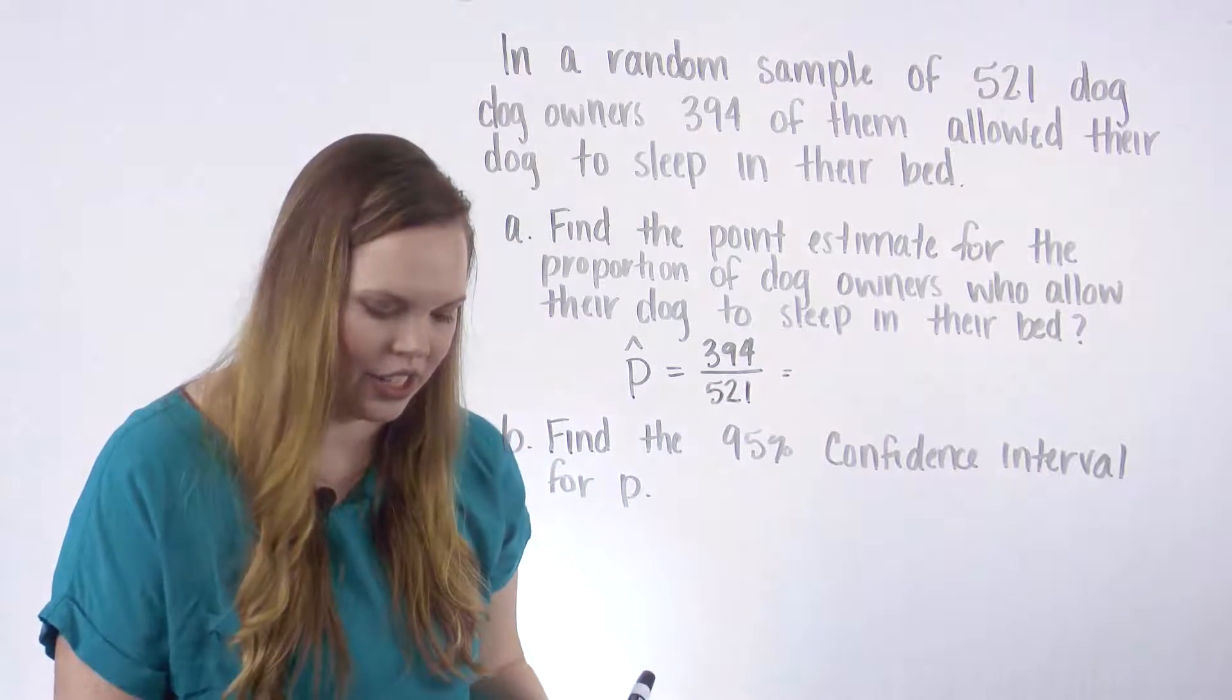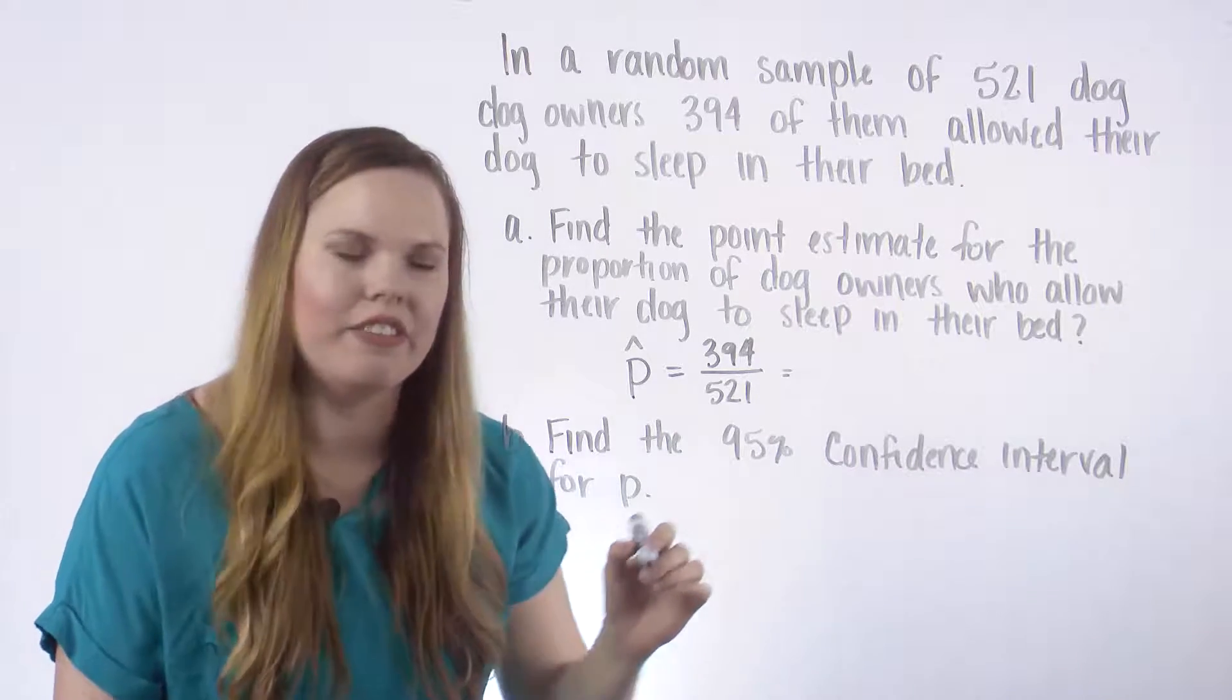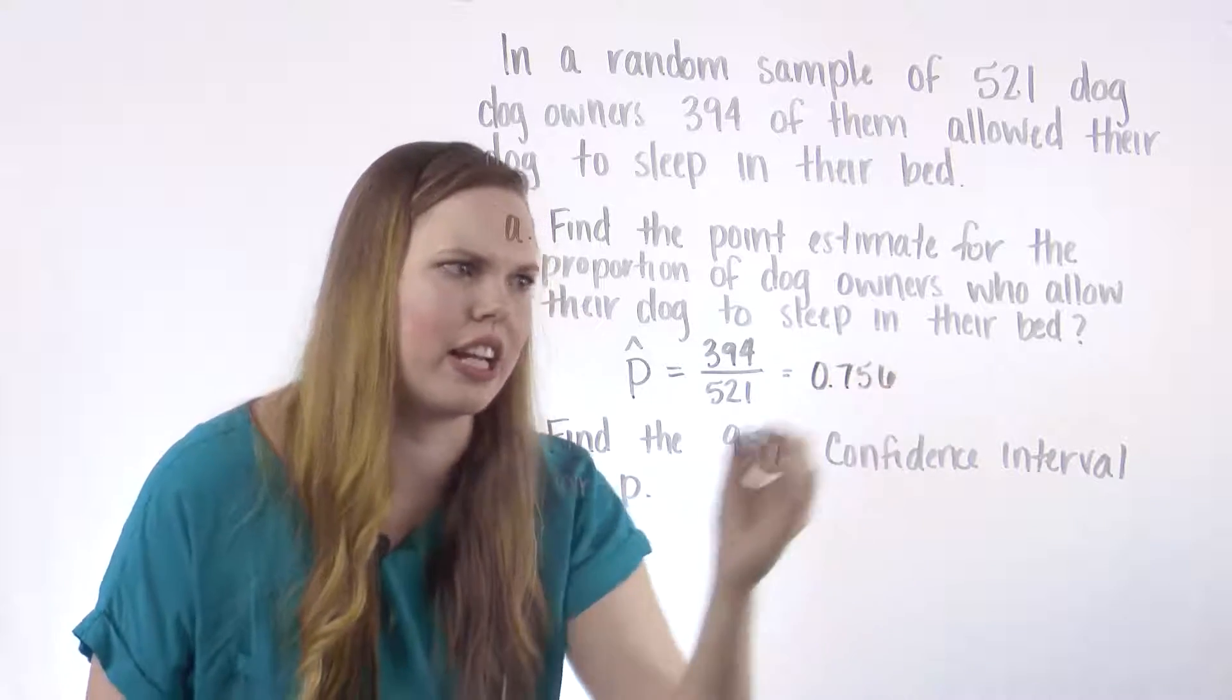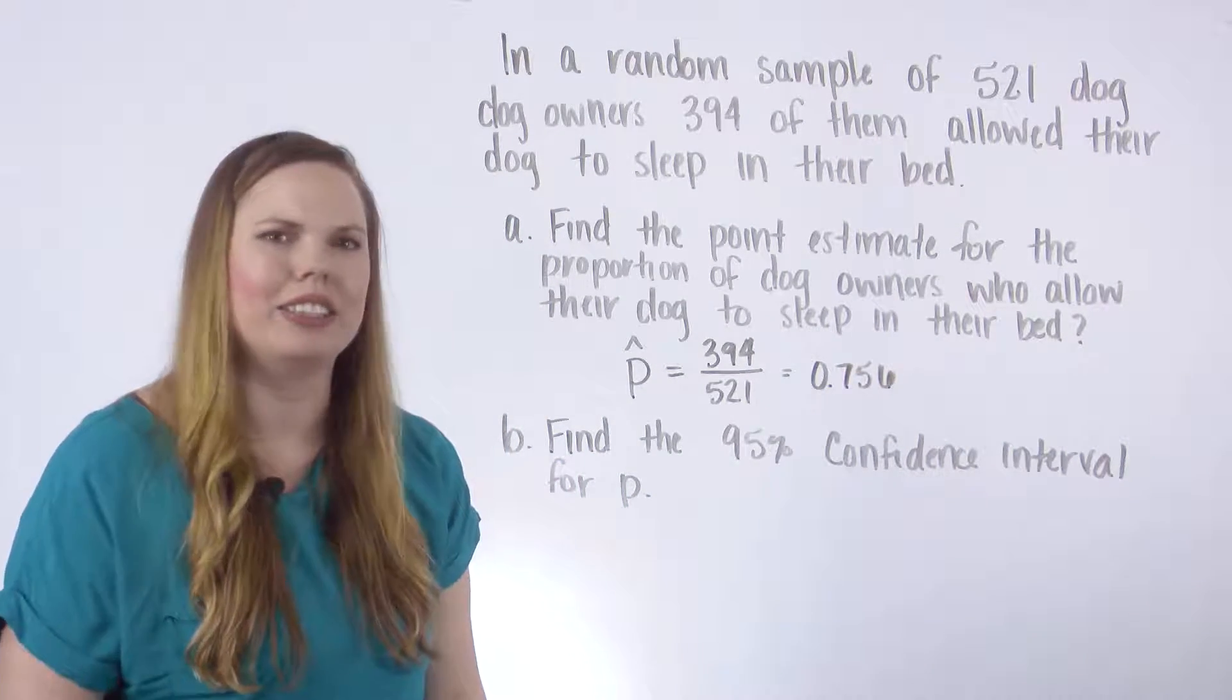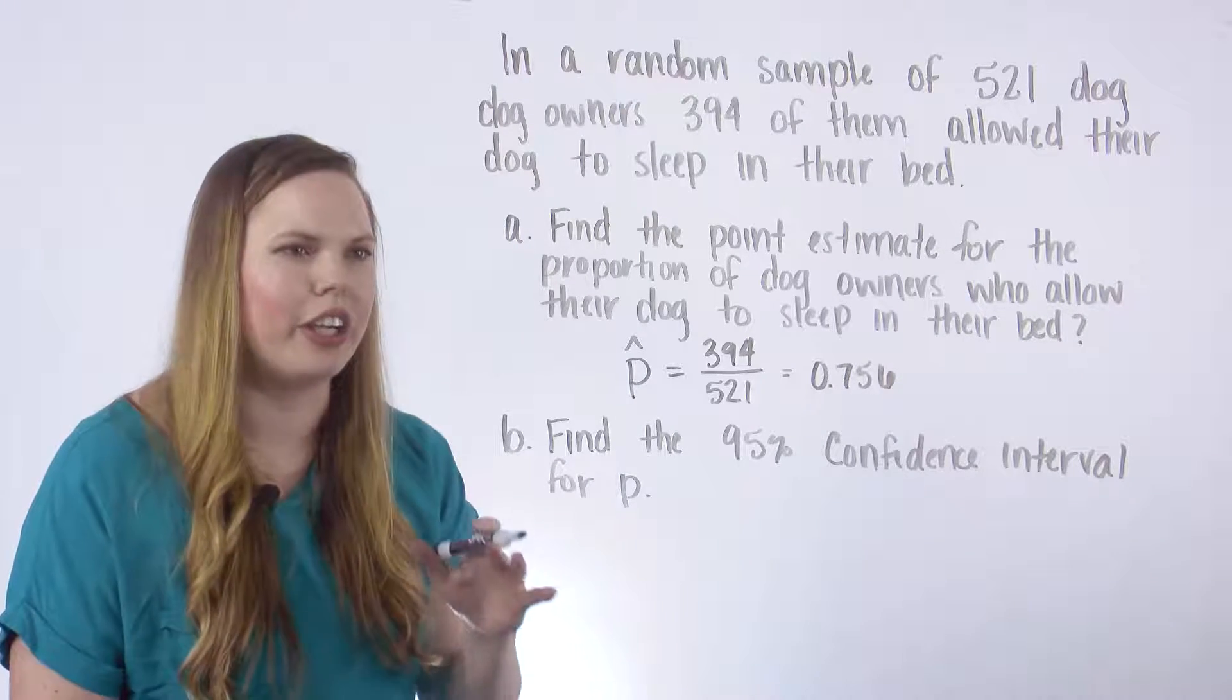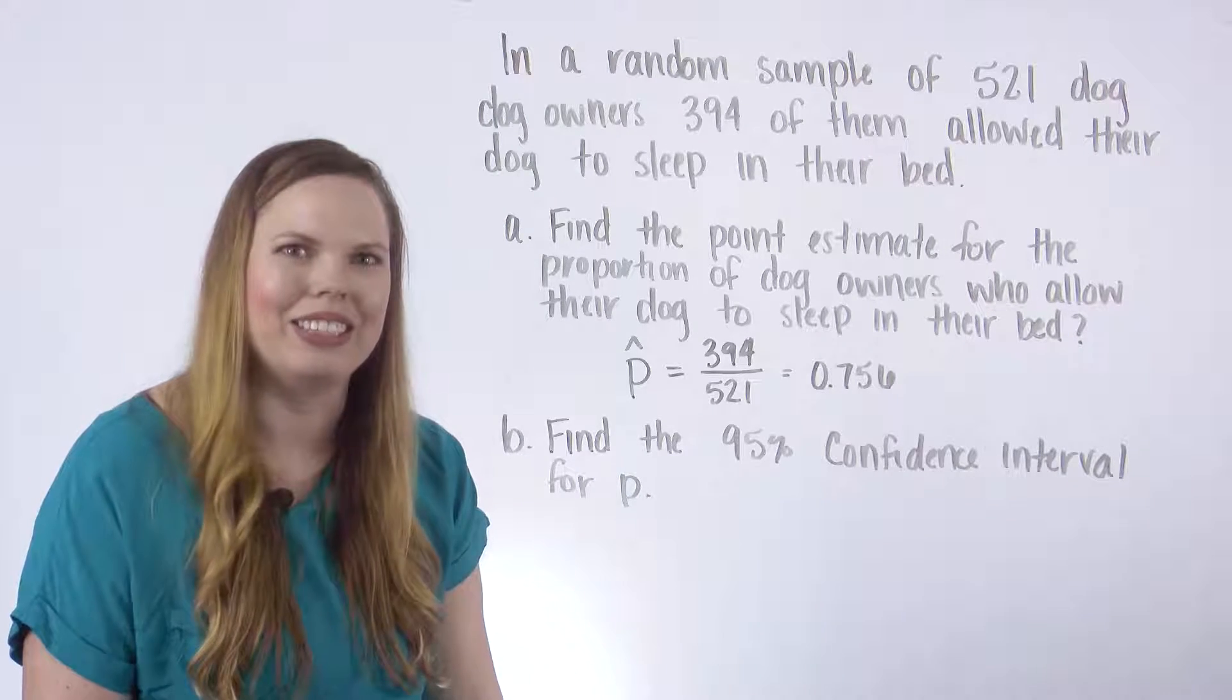Good to go ahead and get that into decimal form. And this is 0.756. I went ahead and did three decimal places just to stay a little bit more accurate as we move forward. Usually for proportions we like 2 or 3 to round nicely to your percentage.